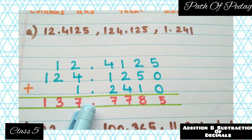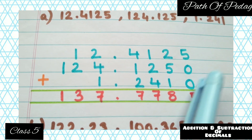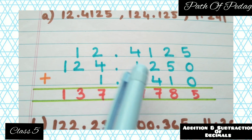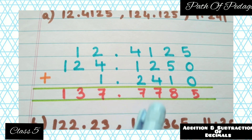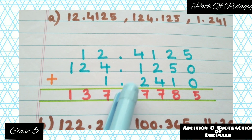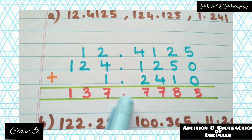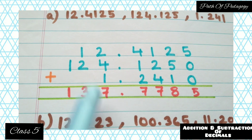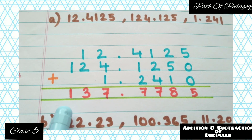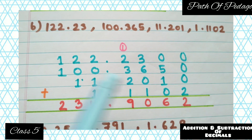Now just add: 5+0+0=5; 2+5+1=8; 1+2+4=7; 4+1+2=7; then the decimal point; 2+4+1=7; 1+2=3; and 1 brought down. So the answer is 137.7785. Move on to the next question, question b.